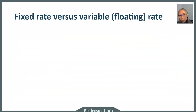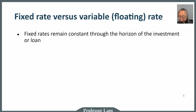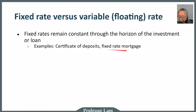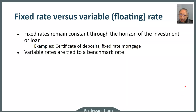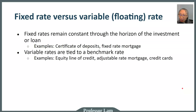Some loan products or investments are fixed rate; others are variable or floating rate. Fixed rates remain constant throughout the entire loan period. Common examples include fixed-rate mortgages, fixed-rate car loans, certificates of deposit, and government bonds. Variable rates are tied to a benchmark — when the benchmark rate changes, so does the interest rate on your loan. Common examples include adjustable-rate mortgages, equity lines of credit, and credit cards, which are often subject to change.